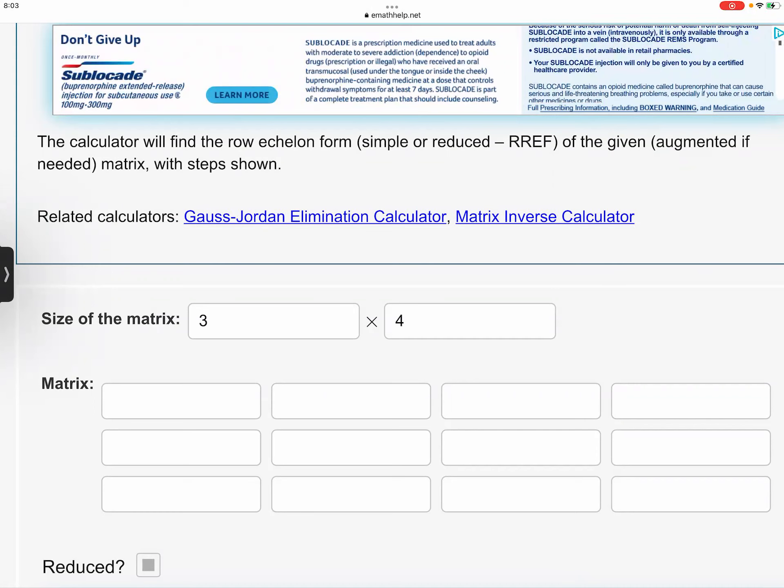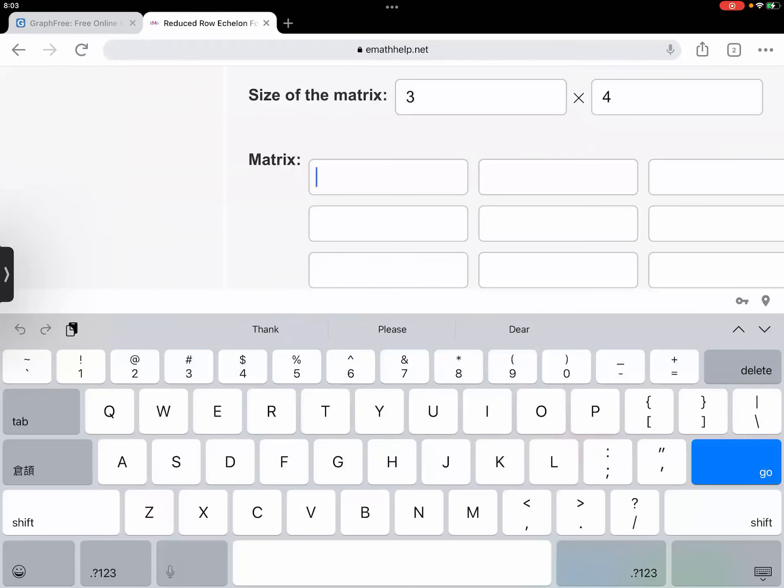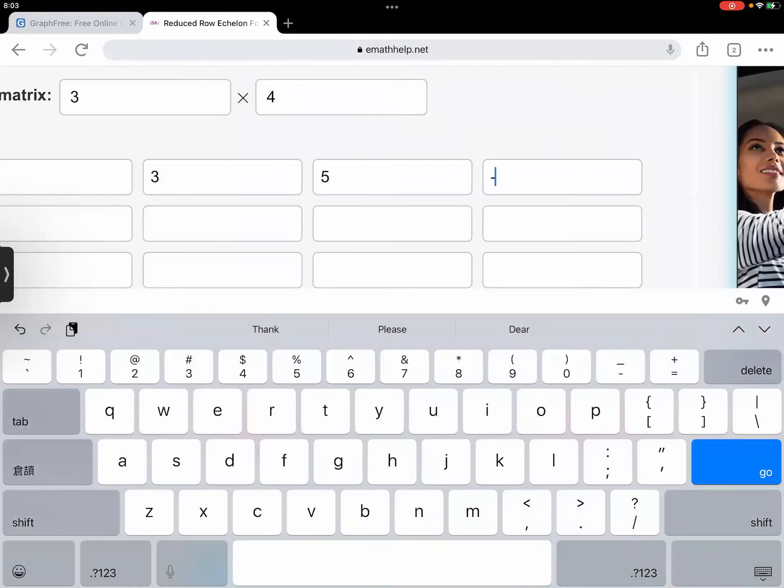So for question number two, I'm going to type in negative one. And then, no, sorry, one, not negative one. Number two, it's one. And then three, and then five, and then negative five.